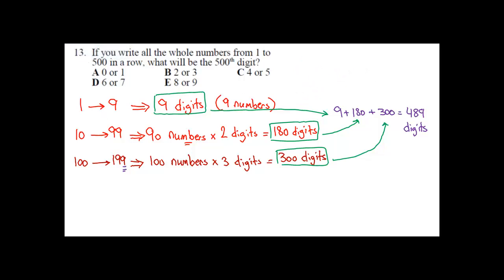Now I would go slowly knowing that I have 489 digits so far and we're looking for the 500th, which means I'm very close. So let's start with the next number after 199, which is 200.